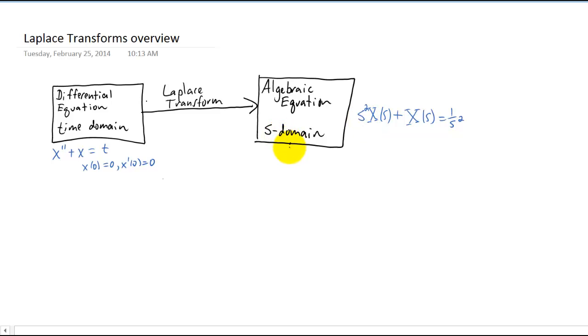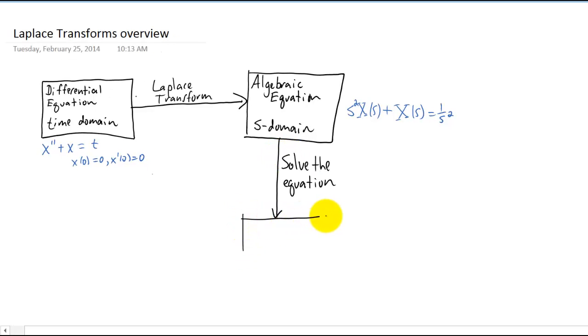Well, what we can do with an algebraic equation is we can solve the algebraic equation, and we solve that equation for the variable capital X in this case, which is a function of s. And in this example, if we solve this equation for capital X of s, which is what we're solving for here, we get an equation that looks something like this.